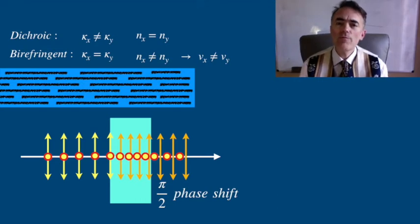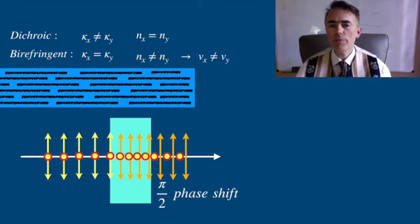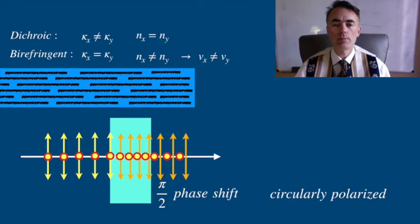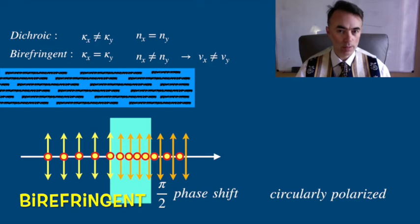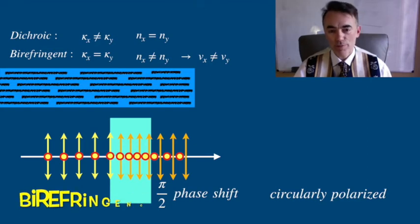Then back in free space both polarizations travel at the same speed, so that what we have is circular polarization. So we can use these materials to rotate the polarization of light also. These materials are called birefringent and the phenomena is birefringence.